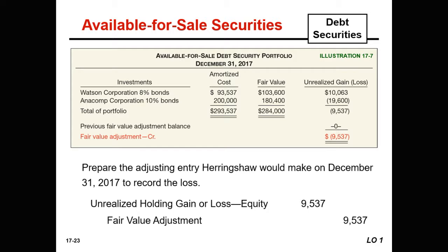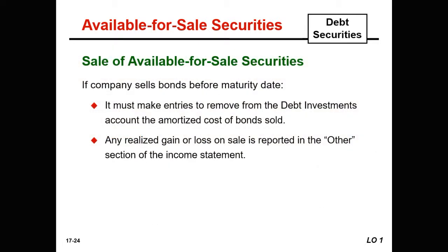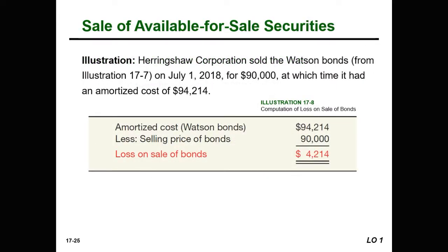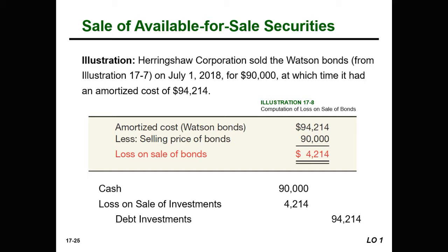If the company does manage to sell the bonds before maturity, they must make entries to remove from the debt investments account the amortized cost of the bonds. Any realized gain or loss on the sale is reported in the other section of the income statement. To illustrate, Harringshaw sold the Watson bonds on July 1st, 2018 for $90,000, at which time the amortized cost was $94,214, resulting in a $4,214 loss. They receive cash of $90,000, record a loss of $4,214, and close out the debt investment with a $94,214 credit.